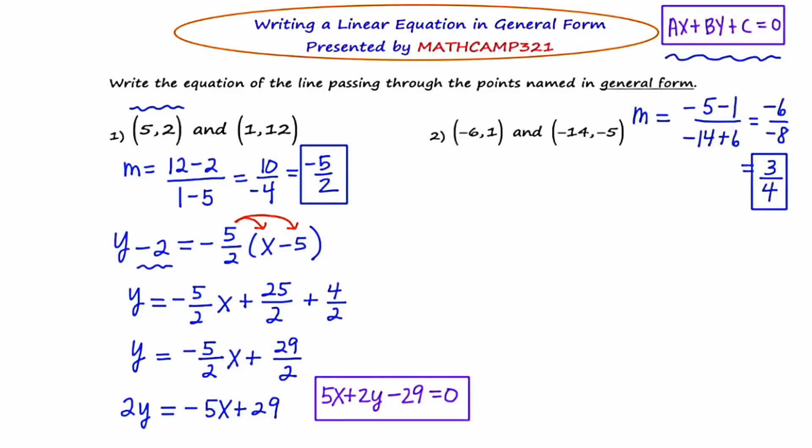The next thing that I'm going to do is write the equation of the line in point slope form. Now I can pick either point that I want. I'm going to use (-6, 1) because the values are smaller and perhaps easier to work with. So I'm going to say Y minus 1 equals 3 fourths times X plus 6. I'm now going to distribute the 3 fourths through the parentheses. So that's going to be multiplied by X and the 3 fourths is going to be multiplied by 6.